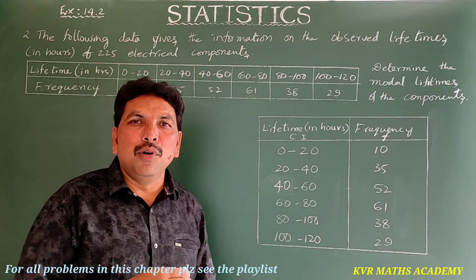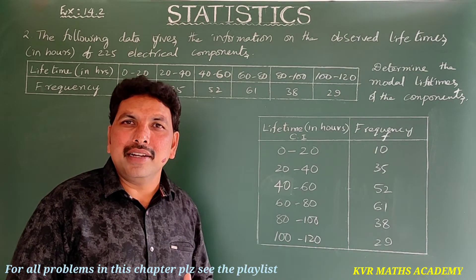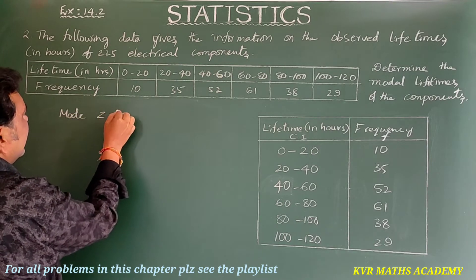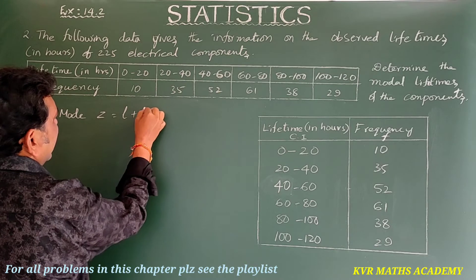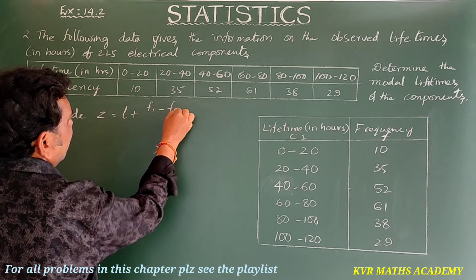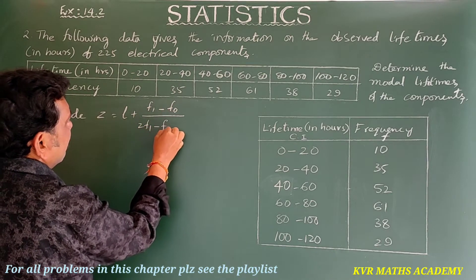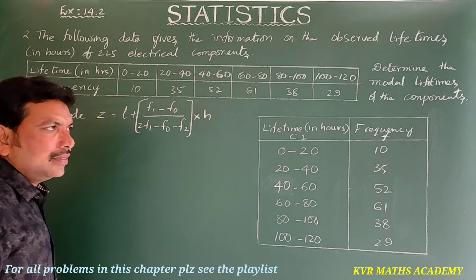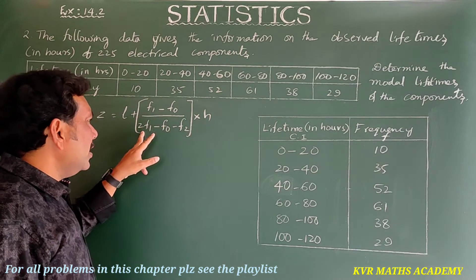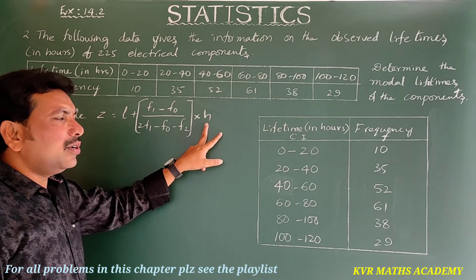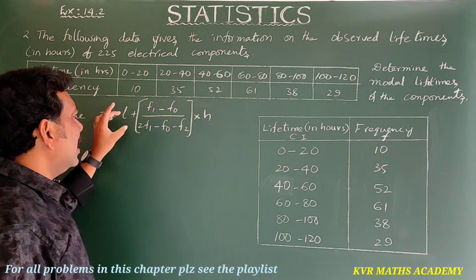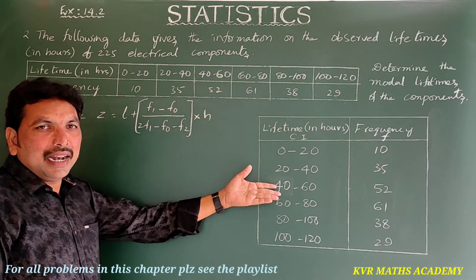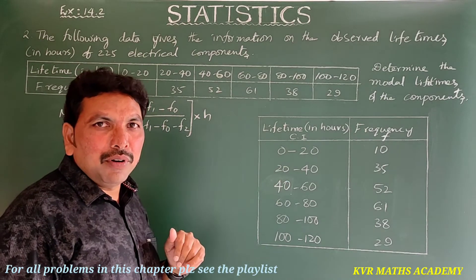What is the formula for finding the mode of grouped data? The formula is: Mode Z = l + [(f1 − f0) / (2f1 − f0 − f2)] × h. Here l, f1, f0, f2, and h are values we need to find from the table.